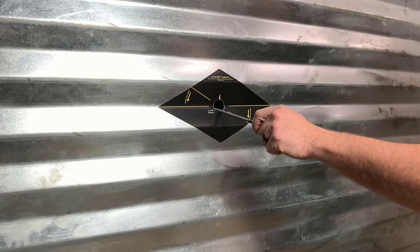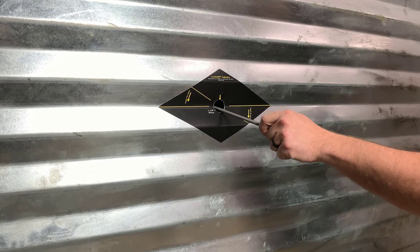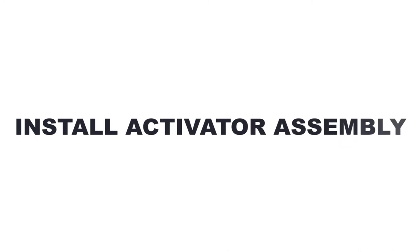After the hole has been cut, file it to remove burrs and sharp edges. And remember to remove metal shavings from the bin floor inside.